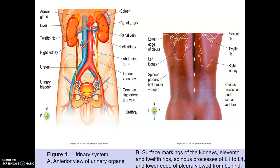The kidneys themselves sit kind of far back in the abdominal cavity — we call that retroperitoneal. The left kidney sits slightly higher than the right in most people. Looking at the spinal column, the kidneys are associated with the 11th and 12th ribs, and the spinous processes from L1 to L4, so lumbar 1 to lumbar 4.